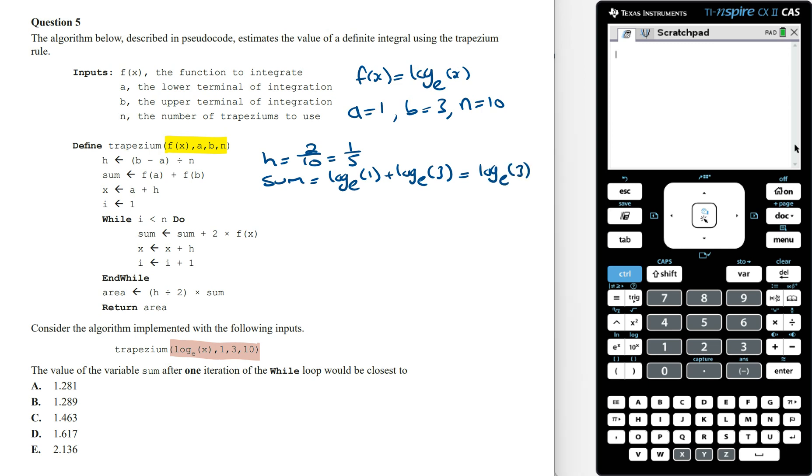Next, x is a plus h, so x equals 1 plus 1/5, which is 5/5 plus 1/5, which equals 6/5. The value of i starts at 1. Now entering the while loop: while i is less than n (1 is less than 10), we perform the following steps.